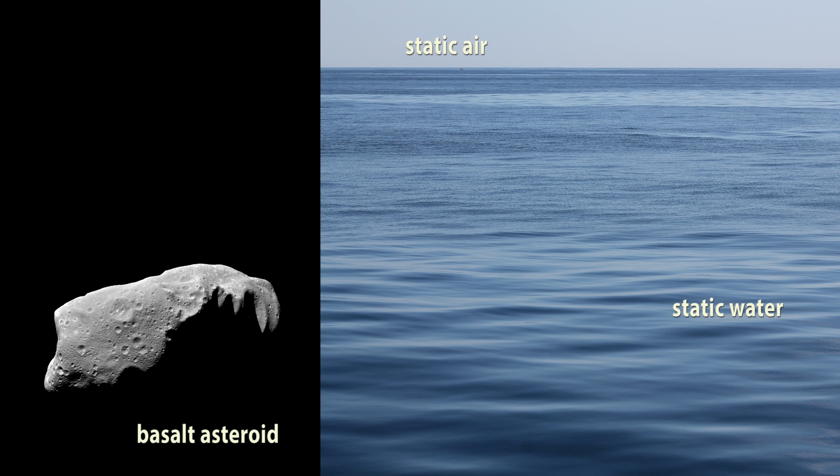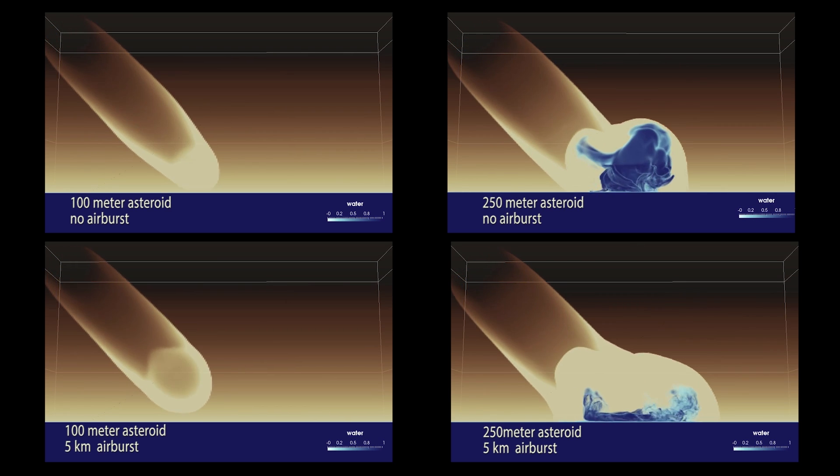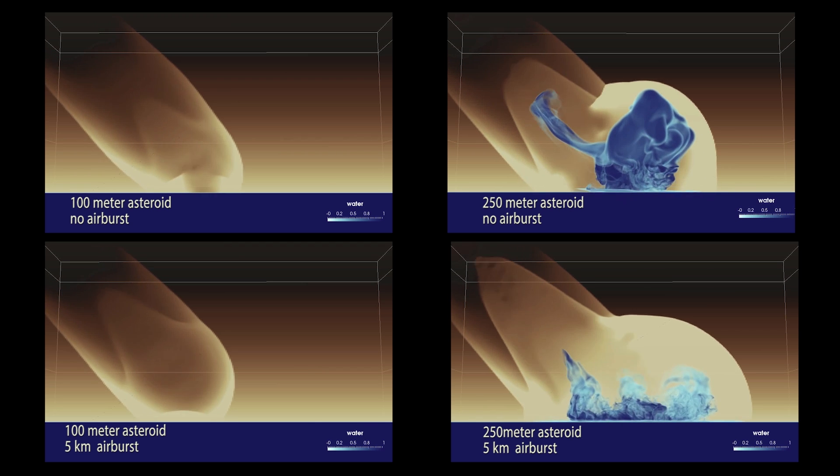Initially, all kinetic energy is assigned to the asteroid. By studying different runs from the ensemble, we see the effects of varying asteroid size, angle of impact, and airburst.